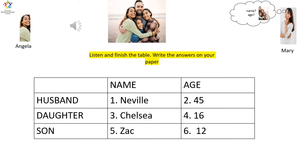How do you spell Neville? It's N-E-V-I-L-L-E. How old is he? He is 45 years old. What's your daughter's name? My daughter's name is Chelsea. How do you spell Chelsea? It's C-H-E-L-S-E-A. How old is she? She is 16. What is your son's name? My son's name is Zach. How do you spell Zach? It's Z-A-C. How old is he? He is 12.